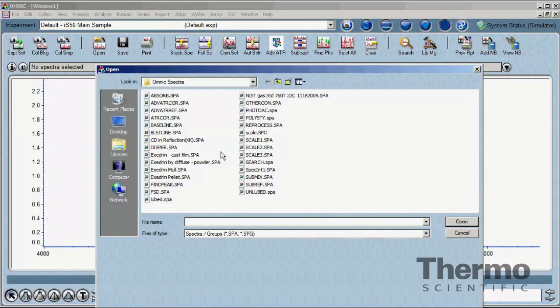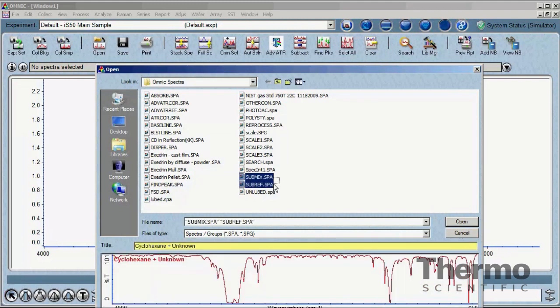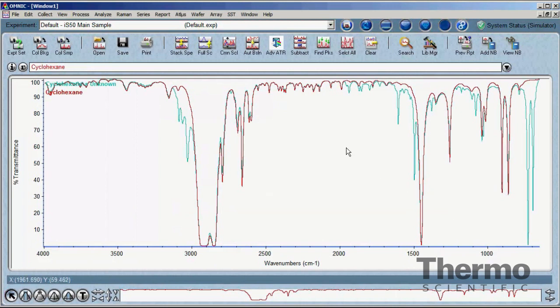Omnic software installs a number of spectral files on your hard drive. These can be used to practice the available tools found on the menus. For this tutorial, we will use the files submix.spa and subref.spa to demonstrate the recommended use of the subtraction tool.